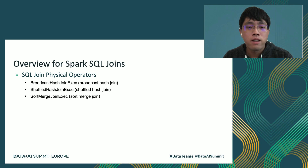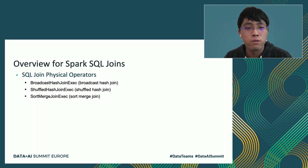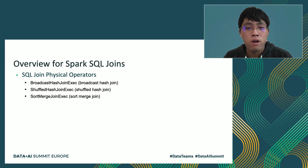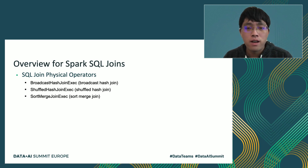Let's take a brief overview of Spark SQL joins — what they are, how they work, and when to use them. Spark SQL has three different join operators: broadcast hash join, shuffle hash join, and sort merge join. Let's go over them one by one.